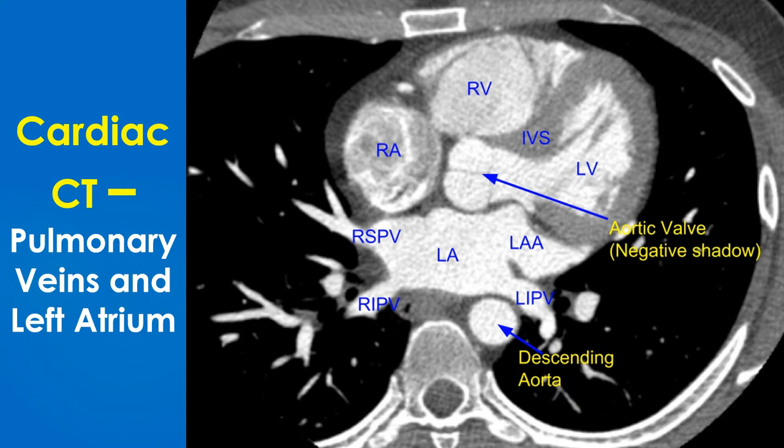Aortic leaflets are seen as negative shadows within the contrast-filled aorta. Since this is not a true cross-sectional image of the aorta, the aortic valve leaflets take an inverted T pattern; in a true cross-section they would appear as a tri-radiate pattern. The interventricular septum is also visible as a negative shadow between the contrast-filled right and left ventricular cavities.